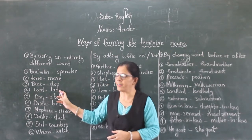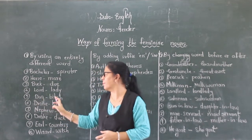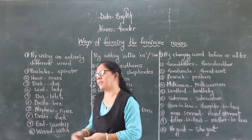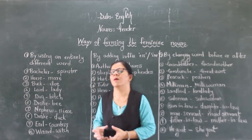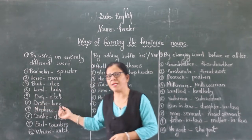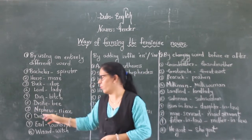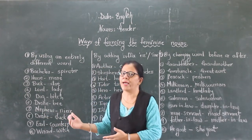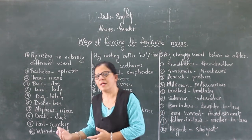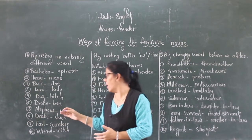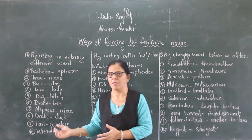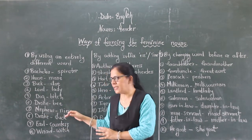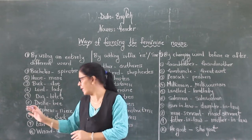Lord, lady. Dog, bitch. Drone, bee — a male bee is called a drone, and the female is bee. Nephew, niece — nephew means your brother's or sister's son, and niece means your sibling's daughter. Drake, duck — drake is a male duck and duck is the female.